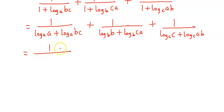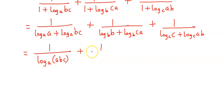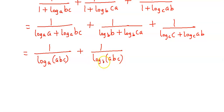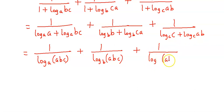1 upon log of A into BC — so that becomes log of ABC, and base आ जाएगा A. Plus 1 upon B into CA — so that is again ABC, तो यह भी हो जाएगा log of ABC और base में आएगा B. Plus 1 upon C into AB — so that is ABC, तो यह हो जाएगा log of ABC और base में आएगा C.